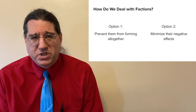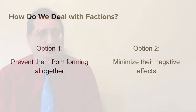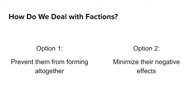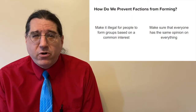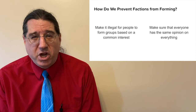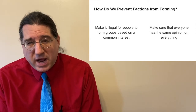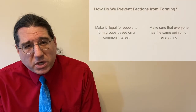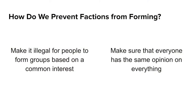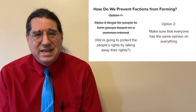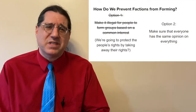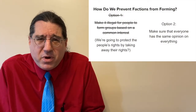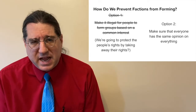Madison eliminates the first option because there are two ways to stop factions from forming, and both of them are terrible. First, you could take away the people's freedoms to form groups so that they don't have the chance to work together to pursue their goals. But if the reason you want to stop factions is that factions endanger the people's freedom, then taking away the people's freedom in order to stop the factions is counterproductive. So that option is out.